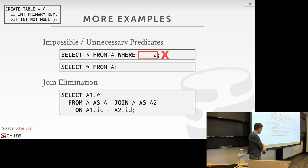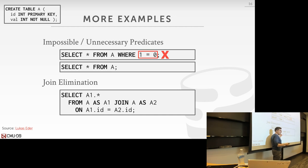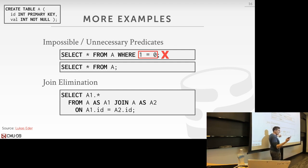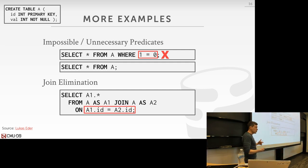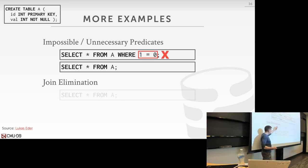We can do the same kind of thing for joins. If I have table A with a primary key ID column, and I do a self-join where A as A1 joins A as A2 on A1.ID equals A2.ID, this is saying for every single tuple in A, check whether it exists in A — which is always true because ID is the primary key. The data system can identify that this join is entirely wasteful and just rewrite it as 'select star from A.'